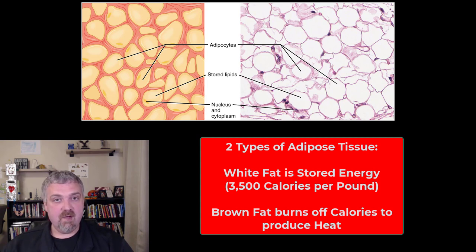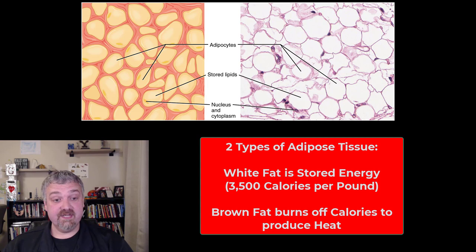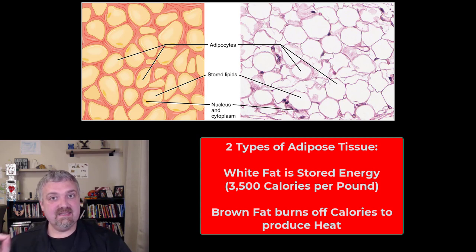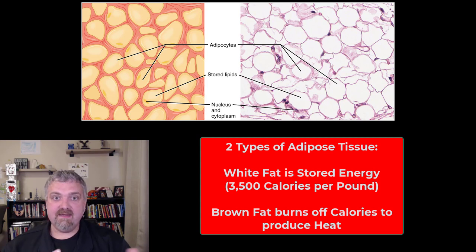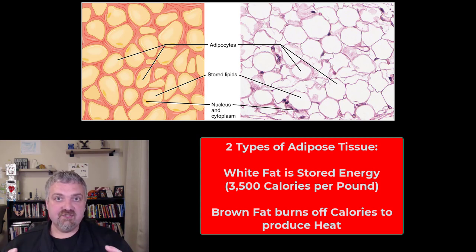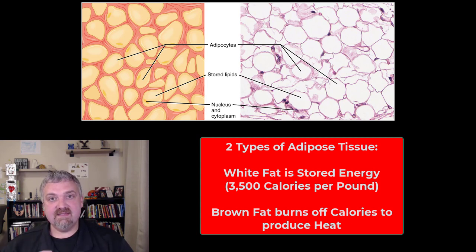Brown fat is brown because it's very vascular — it has lots of blood vessels and lots of mitochondria. Brown fat is very metabolically active, but its job is to break down fat and produce heat. Children have more brown fat, and people who can eat a lot of calories and burn them off easily probably have more brown fat too.